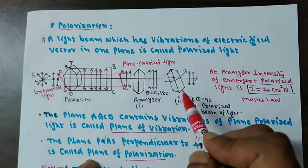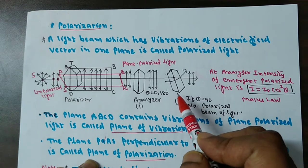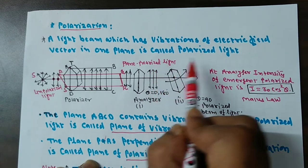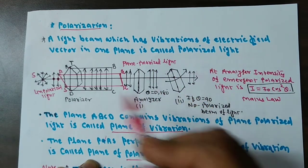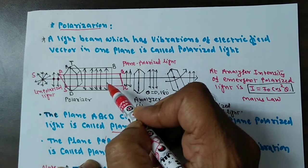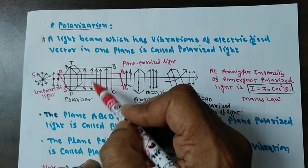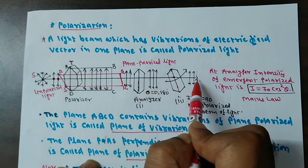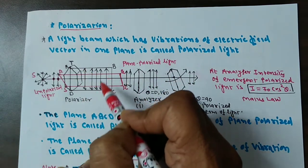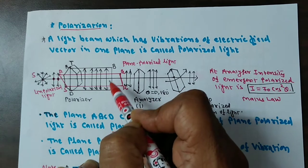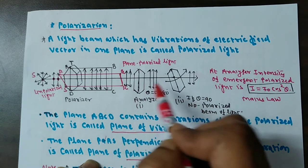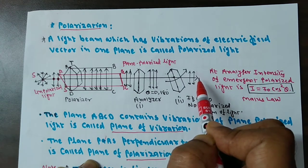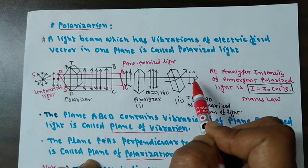Now, what do we mean by polarized light? If a light beam has vibration of the electric field vector in one plane, it is called polarized light. You can see here, vibrations of electric field vectors are parallel to each other and remaining perpendicular to the direction of wave propagation. All electric field vectors are vibrating in a particular plane. This type of vibration produces polarized light.